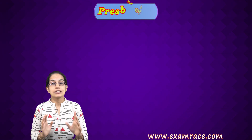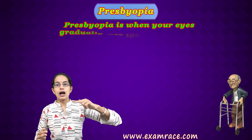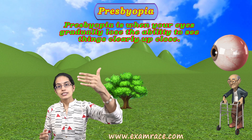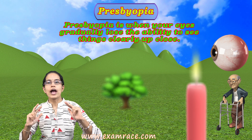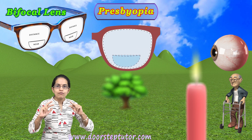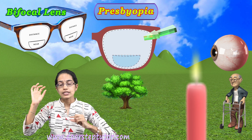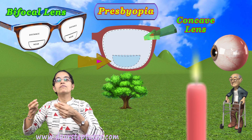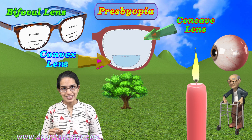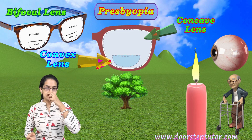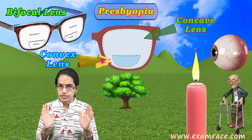The next important condition is presbyopia. Presbyopia usually occurs with increasing age, where nearsightedness starts to reduce — myopia starts to reduce and hypermetropia starts to increase. Therefore, a bifocal lens is required. The upper part of the spectacles has a concave lens to help see far objects, while the lower part has a convex lens to help see near objects. That is why it's called a bifocal lens.